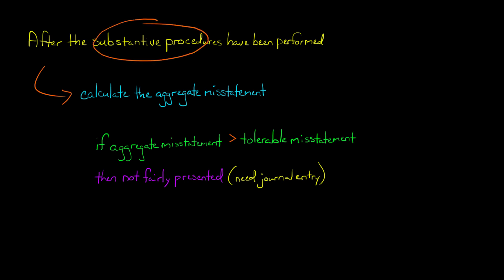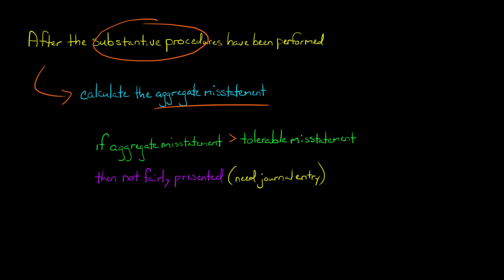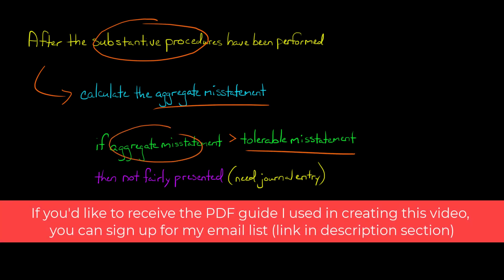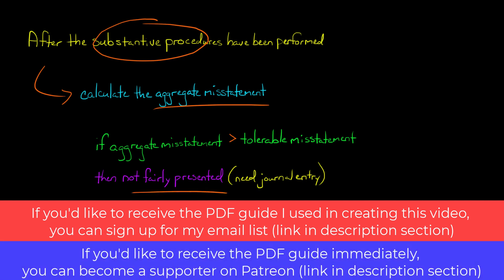After all the substantive procedures have been performed, the auditor will calculate the aggregate misstatement and compare it to the tolerable misstatement. If the aggregate misstatement is higher than the tolerable misstatement, the auditor will conclude that the payroll-related liabilities and accounts have not been fairly presented and will require that the client make a journal entry.